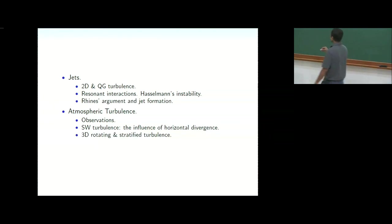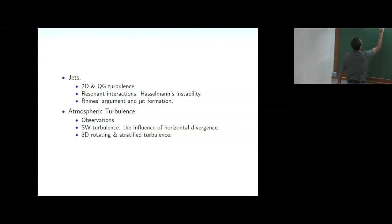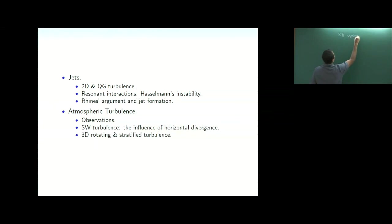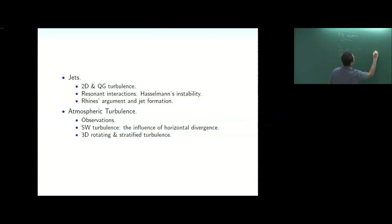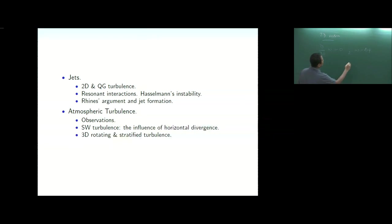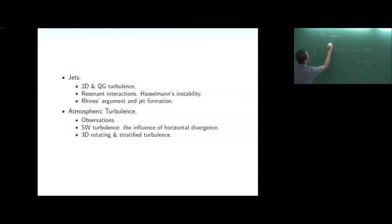In a 2D system the evolution equation is simply: the material derivative of vorticity omega equals zero, where omega is the vorticity given as the Laplacian of a stream function. This is a 2D incompressible system: partial u/partial x + partial v/partial y = 0. The dynamics is contained entirely in the evolution of the vorticity.